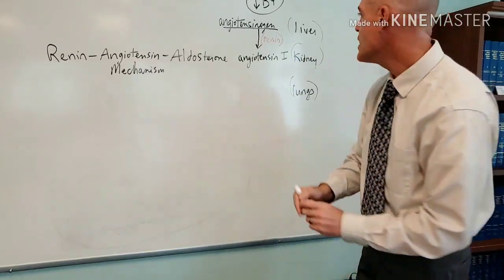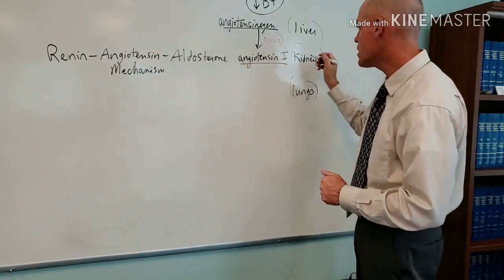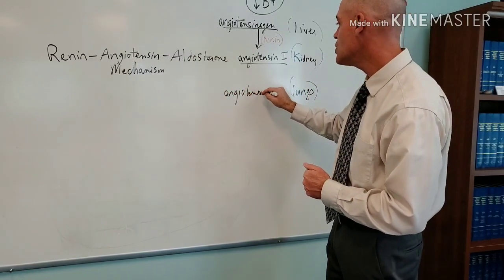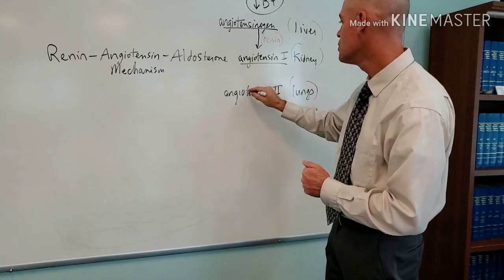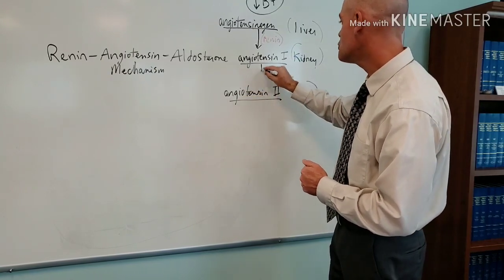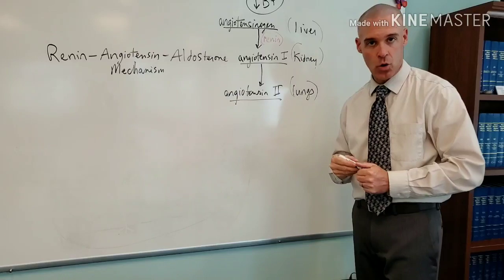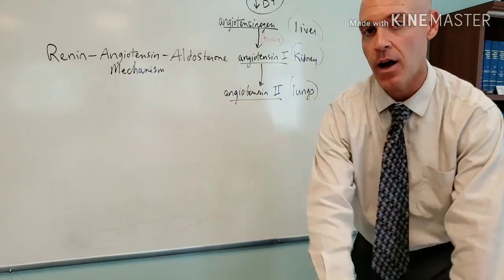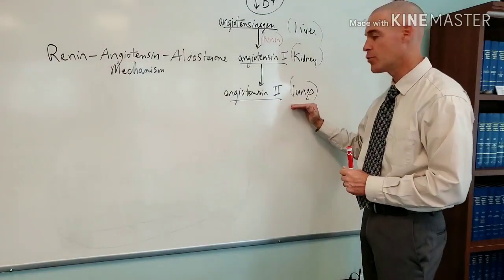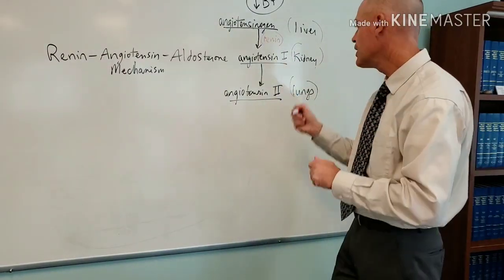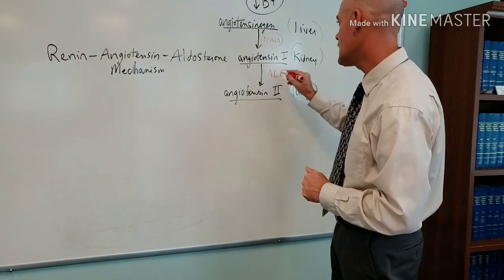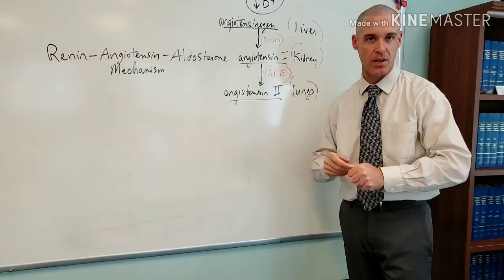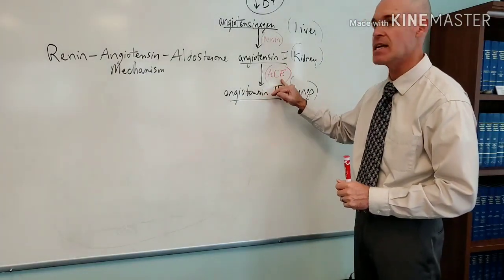So then we get angiotensin-1, which then will be converted again, now we're down in the lung, into angiotensin-2, which we refer to as a functional hormone. These would not be functional. Angiotensin-2 would be considered a functional hormone. Conversion occurring in the lungs by what now? Angiotensin-converting enzyme. That's what ACE is going to stand for. Angiotensin-converting enzyme.